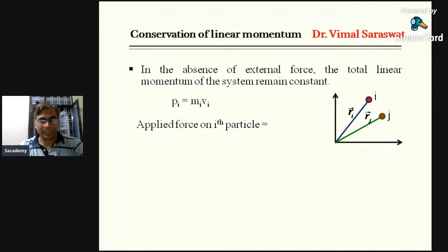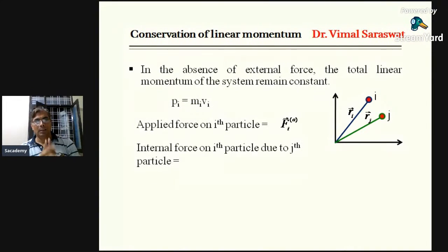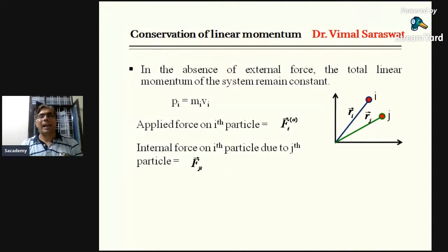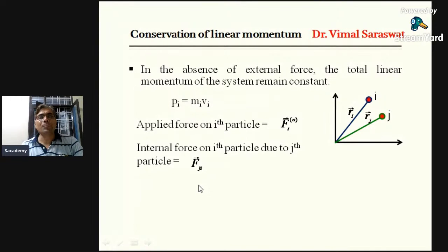Now, the applied force on the i-th particle, or external force, is F_i applied. F_i applied is the applied force on the i-th particle. The internal force on the i-th particle due to the j-th particle is F_ji, since every particle applies an internal force on another particle. If we add these two forces, we get the total force on the i-th particle.